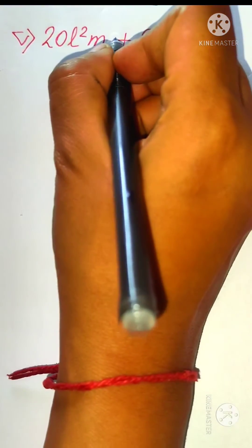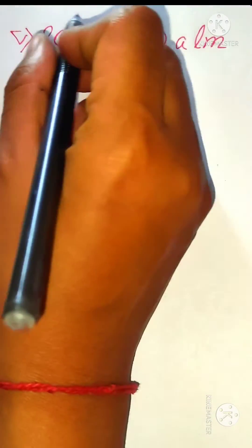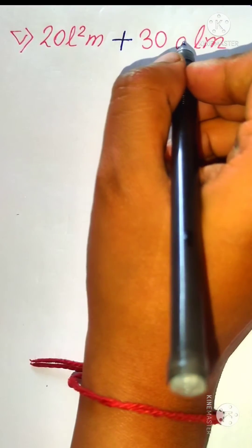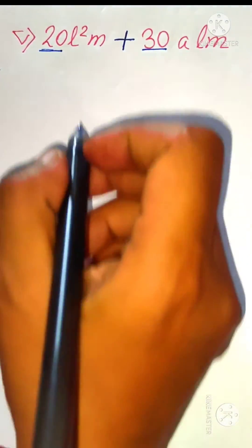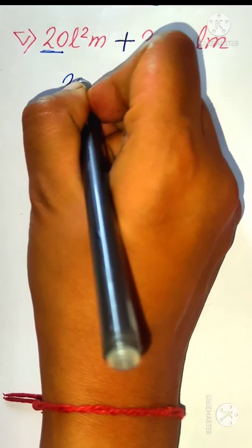Here, as you can see, plus is the separator, so this is our term and this one is another term. Here we have 20 as the constant and here we have 30 as the constant.